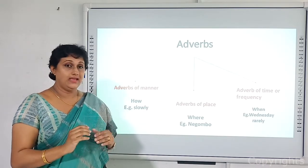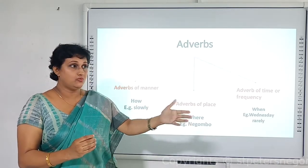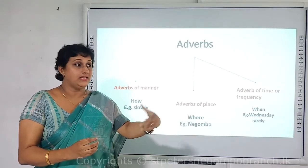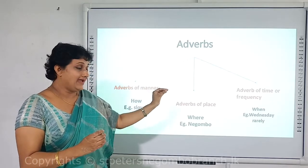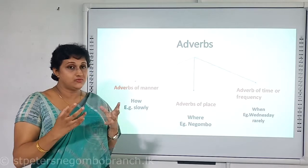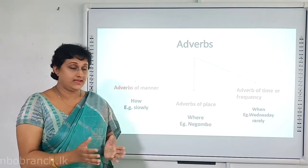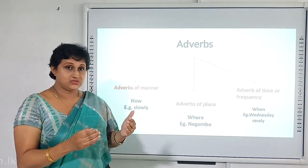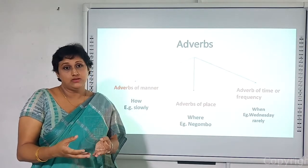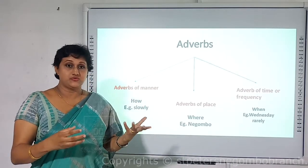Adverb of place tells where the action has taken place — ask 'where' from the verb. For example, 'She went home' — 'home' is the adverb of place. 'I was born in Negambo' — 'in Negambo' is the adverb of place. Any location such as a playground, cinema, school, or a country name can be taken as an adverb of place.